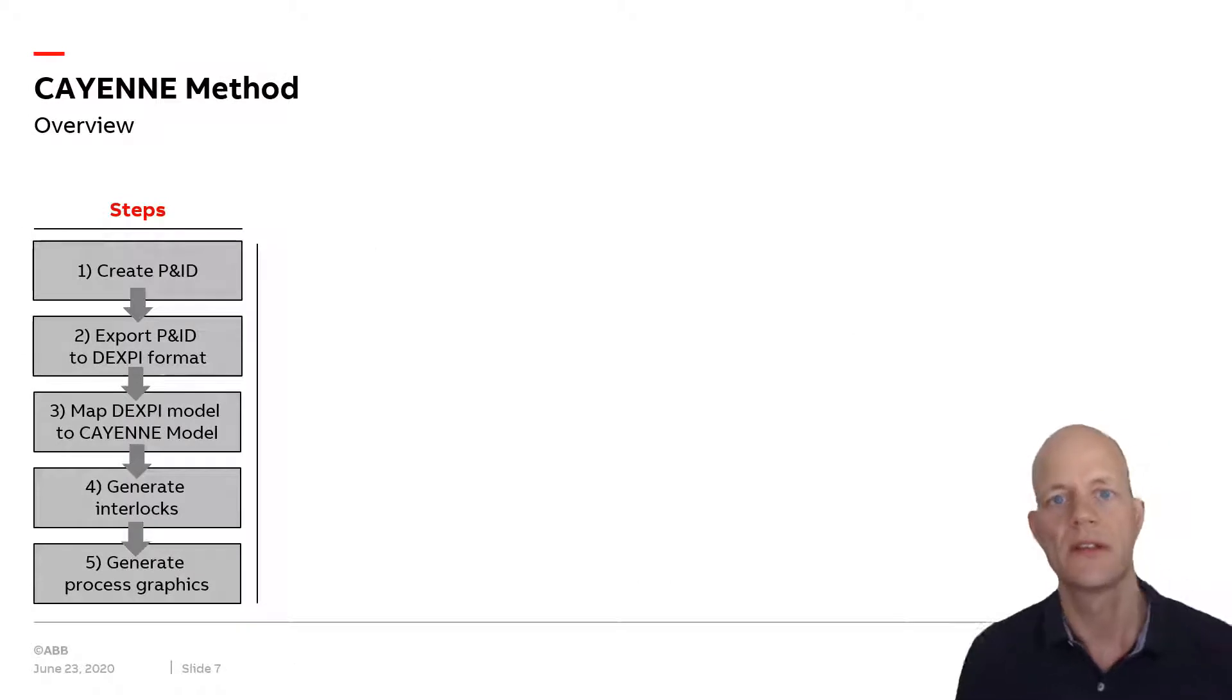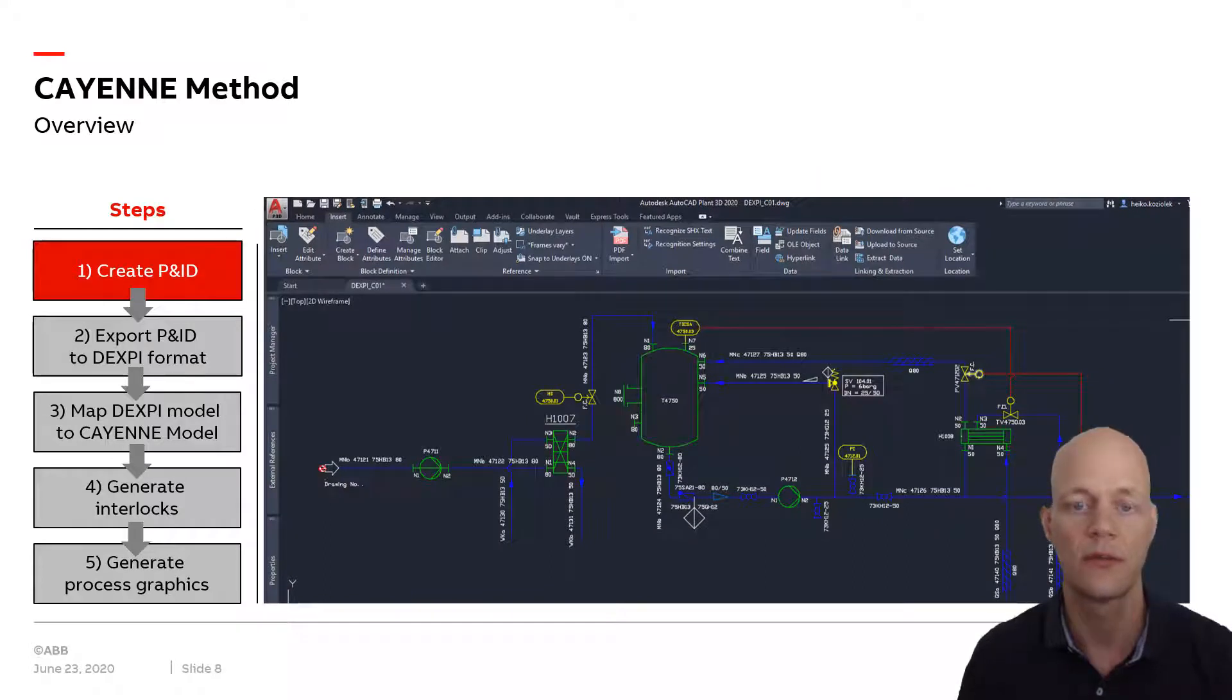The CAYENNE method consists of five different steps. Here's a short overview. First, you create a P&ID regularly in your CAD tool, computer design tool, for example using AutoCAD and do just a regular drawing.